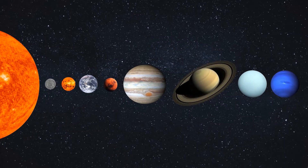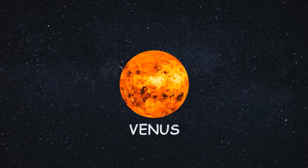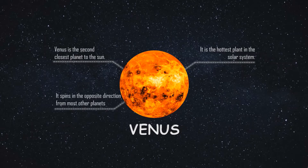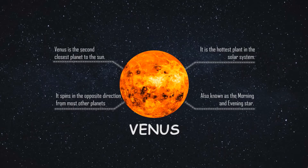The next planet is Venus. Venus is the second closest planet to the sun and is the hottest planet in the solar system. Even though Mercury is closer to the sun, Venus is hotter because of its thick carbon dioxide atmosphere that traps heat inside. Venus also spins in the opposite direction to most planets, so the sun rises in the west there. It is easily visible as the brightest star in early morning and evening, which is why it is known as the morning or evening star.